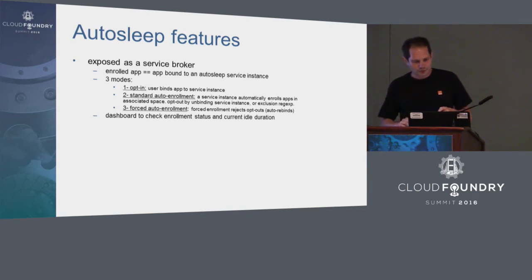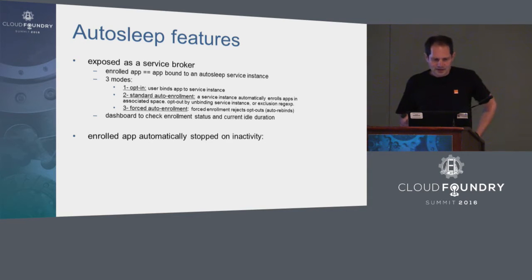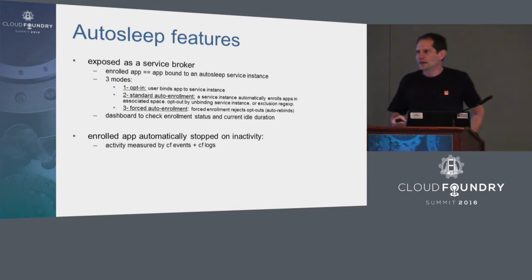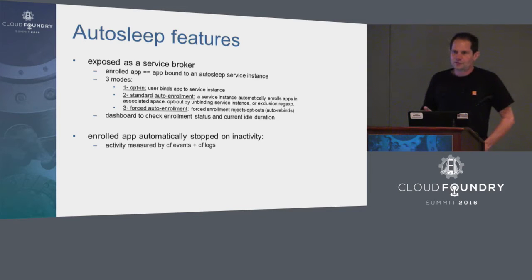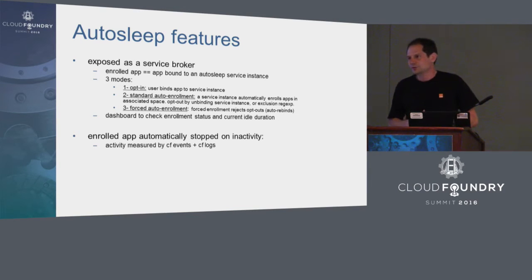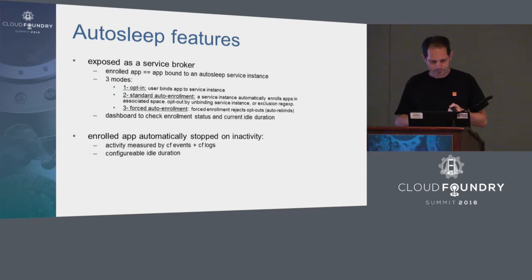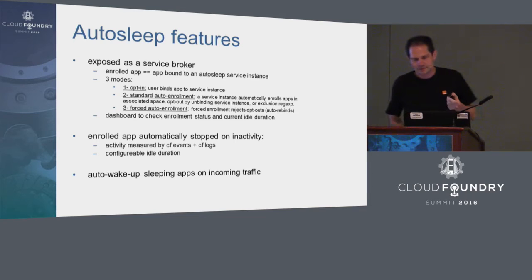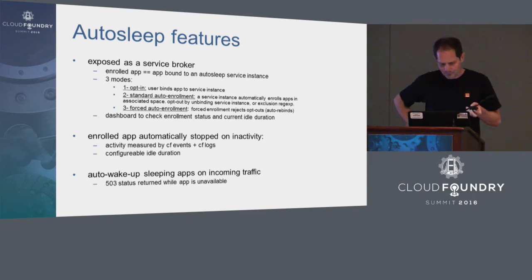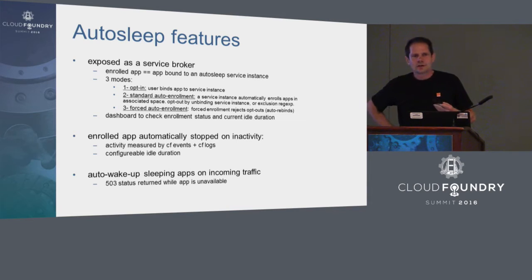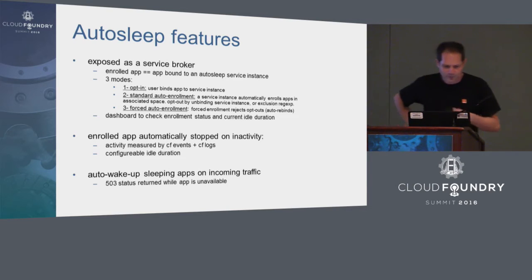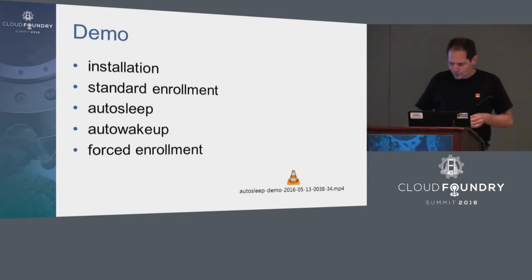We have a dashboard to check the enrollment status and the idle duration. The app is stopped on inactivity — activity is measured by the logs that the application produces and the logs that the GoRouter produces for the app. Any traffic received by the app keeps it active. CF events also contribute to the activity measured: if you update an app environment variable or scale it, that's evidence of activity on your app, so the app is not considered inactive. While the app is starting up, we currently return a 503 status code. We plan to improve that.